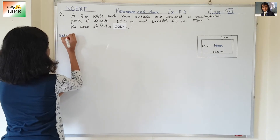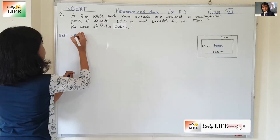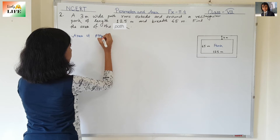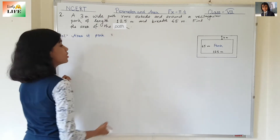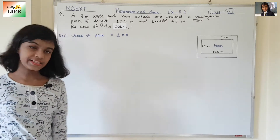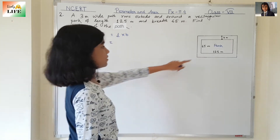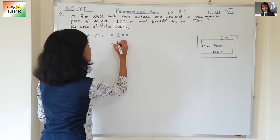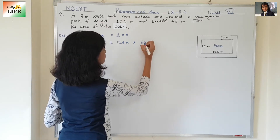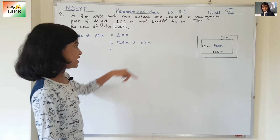First, let's find out the area of the park. It is a rectangle, so the formula for the area of a rectangle is L into B — length into breadth. The length is 125 meters and the breadth is 65 meters, so we need to multiply 125 and 65.